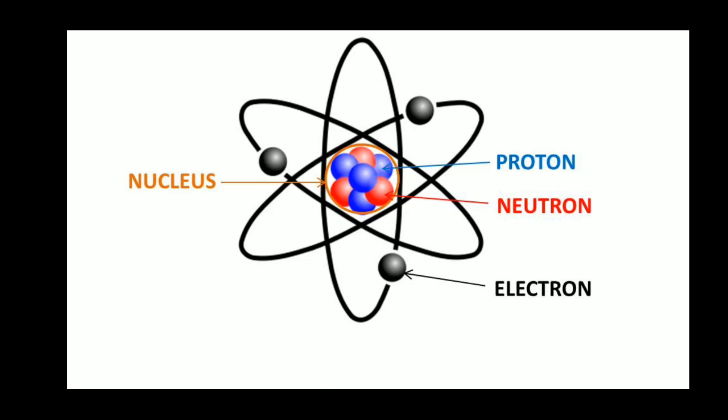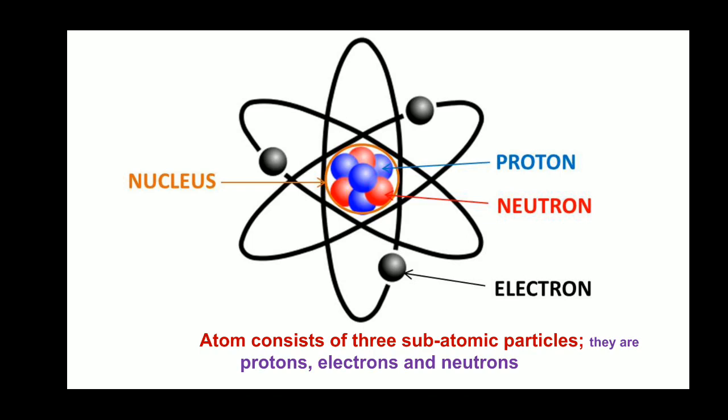There are two things — one is proton, another one is electron, and the third one is called neutron. So atom consists of three subatomic particles: protons, electrons, and neutrons. Is there a difference? Proton and electron are charged particles, but the neutron is not a charged one — it is a neutral particle.